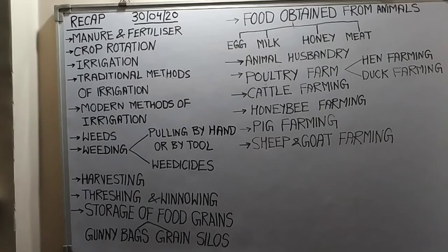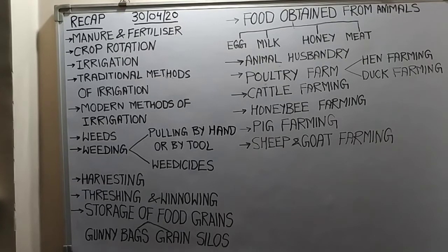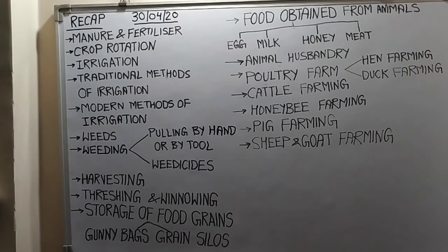Irrigation is necessary because it provides moisture for the germination of seeds. Even after germination, irrigation is done regularly at regular intervals in the field to maintain the moisture of the soil for the healthy growth of crops. Because of irrigation, the nutrients present in the soil and fertilizer are absorbed by the roots of the plant along with water.